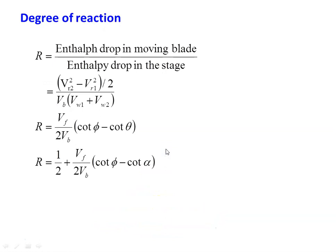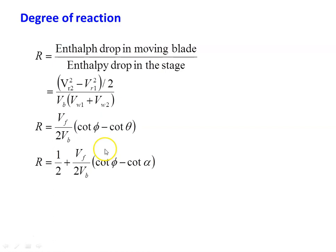One important parameter in the reaction turbine is the degree of reaction. The degree of reaction R is defined as the enthalpy drop in the moving blade divided by the enthalpy drop in the entire stage. The enthalpy drop in the moving blade equals (vr2² − vr1²) / 2, due to the change in pressure across the moving blade. The enthalpy drop in the stage equals the work produced: vb × (vw1 + vw2). Substituting from the velocity triangle: R = (vf / 2vb) × (cot φ − cot θ), or equivalently R = 1/2 + (vf / 2vb) × (cot φ − cot α). The degree of reaction varies from 0 to 1.